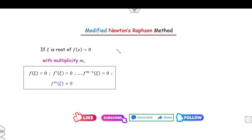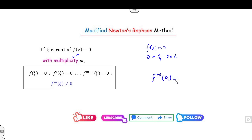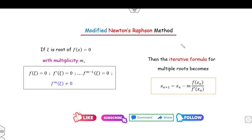Quickly recalling: what are multiple roots? If you have the function f(x) = 0, then x = xi is called a root of this equation with multiplicity m when the m-th derivative of the function at the point xi is non-zero, while all those previous derivative values are zero. Once you have found the multiplicity, you can find the iterative scheme using the modified Newton-Raphson method.